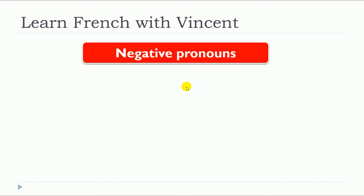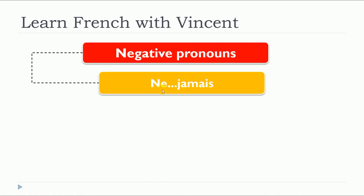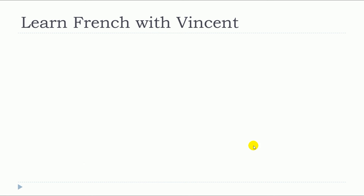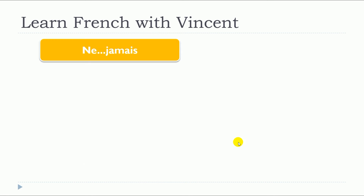This lesson is about NE JAMAIS. The negative pronoun NE JAMAIS can be translated into English as NEVER. We will see some examples with NE JAMAIS.